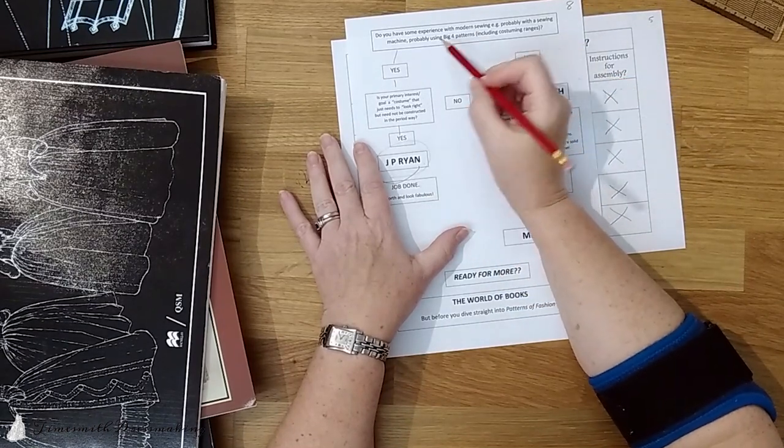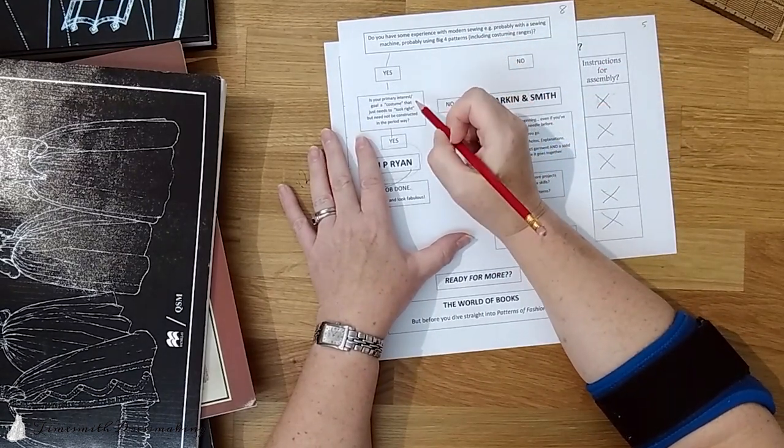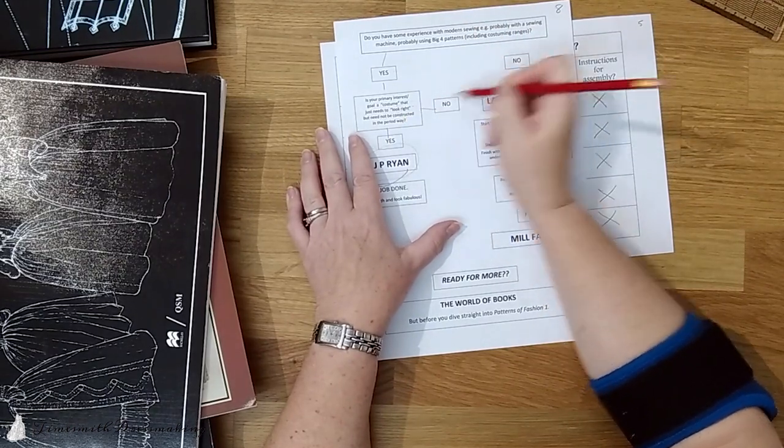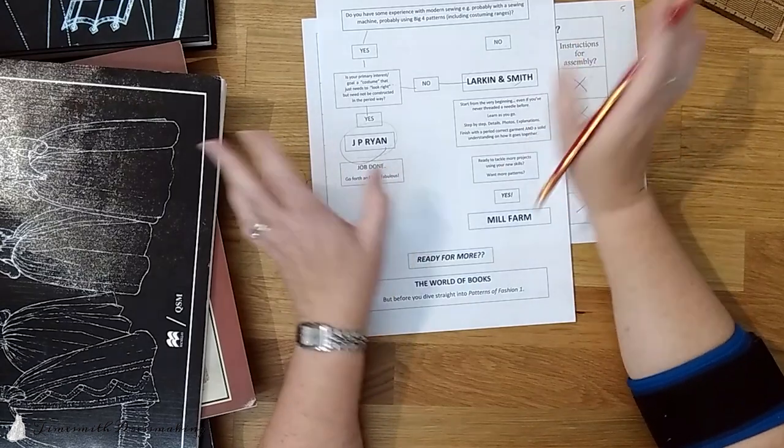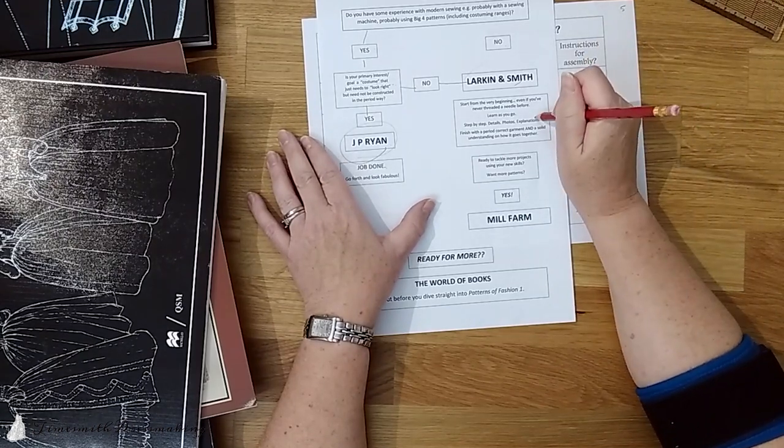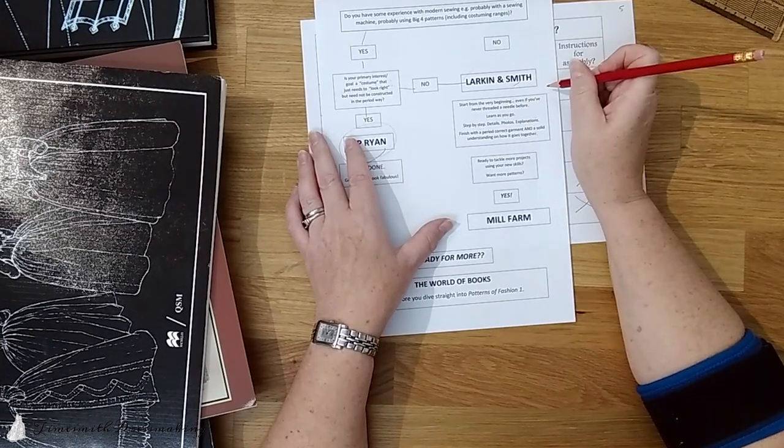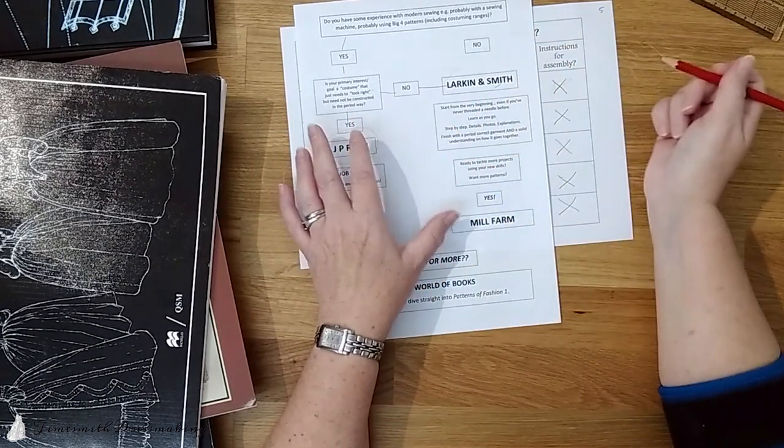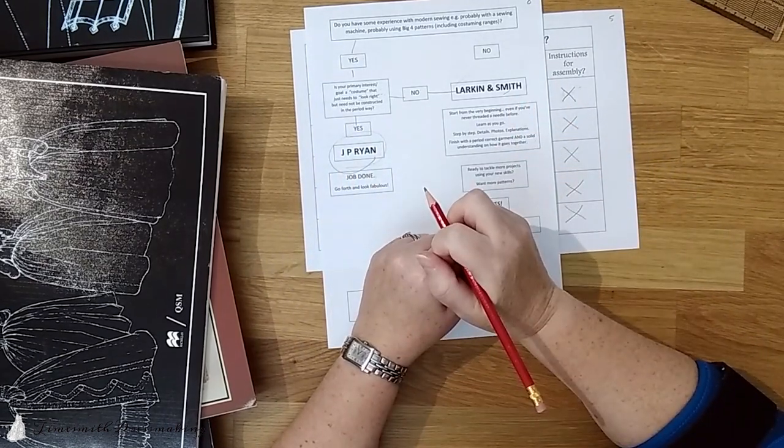Going back though, you've got a little experience. Your primary interest though, is you'd like period way. So you've answered, Yes, you have some experience, but no, your primary interest isn't about just enough to look okay. You'd like it to be constructed in the period way. Then I direct you to Larkin and Smith. Start from the very beginning. Even if you've never threaded a needle before, or are very proficient with your sewing machine. Learn as you go. Step by step. Details, photos, explanations. If you can use a machine, the instructions will tell you where and when that's appropriate and how to do it. What changes or adjustments or variations might be needed. It assumes that you're sewing everything by hand, but absolutely machine sewing can fit in with that. And you will finish up with a period correct garment and a solid understanding of how it went together.